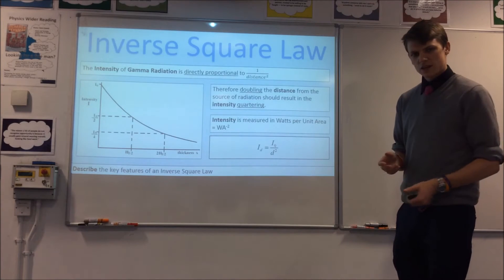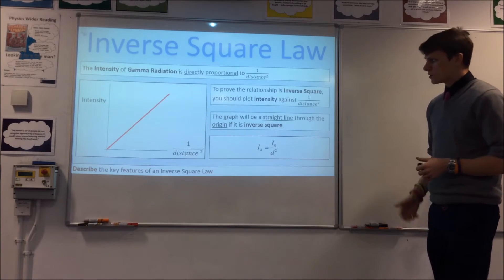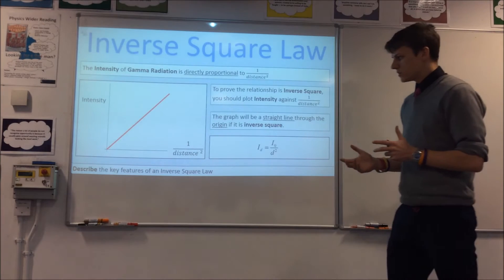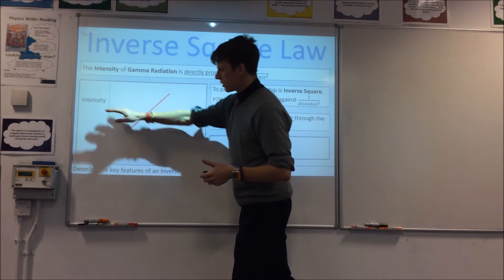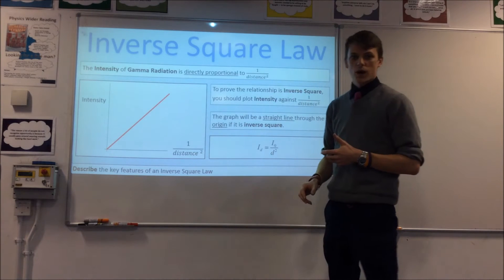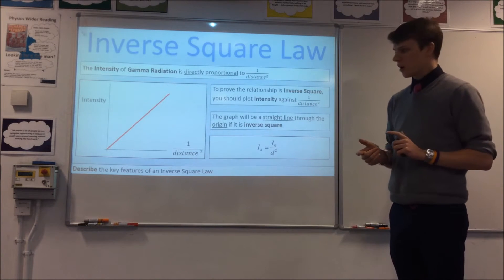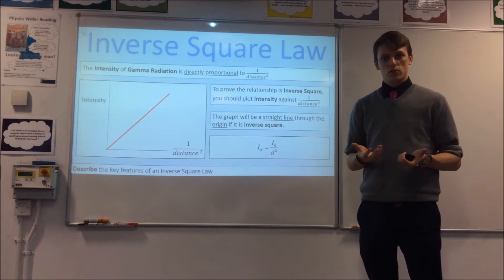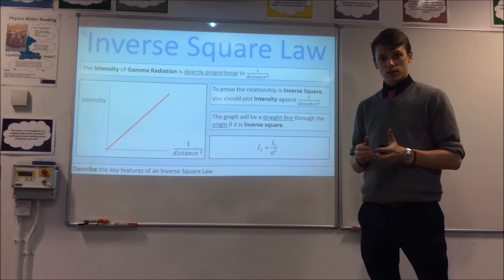Let's look at how we actually prove this law. To prove an inverse square law, you need to plot a graph of one of your variables — in this case intensity — against 1 over distance squared. That should give you a directly proportional graph, a straight line through the origin, if it is indeed an inverse square law. That's the way you prove that relationship.